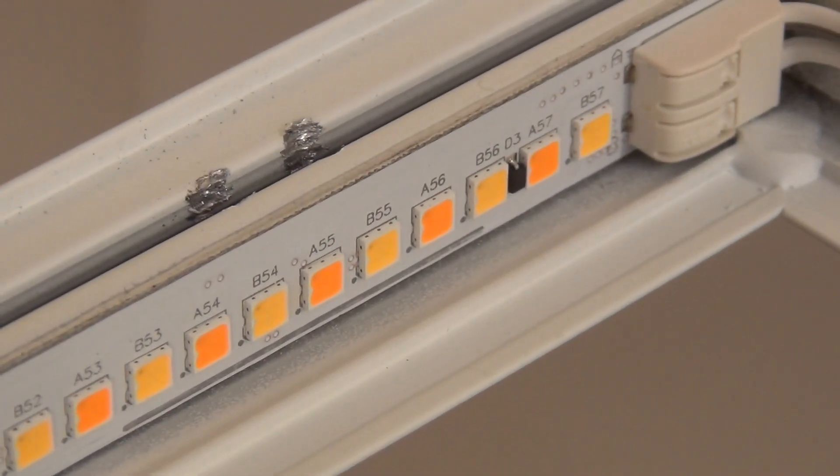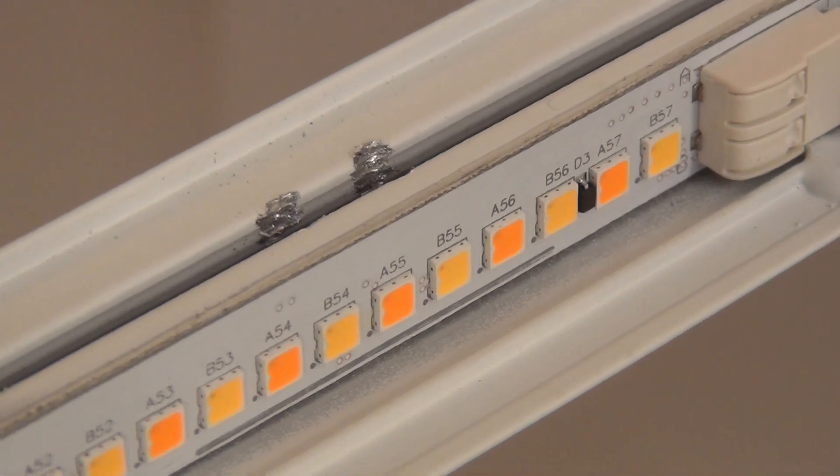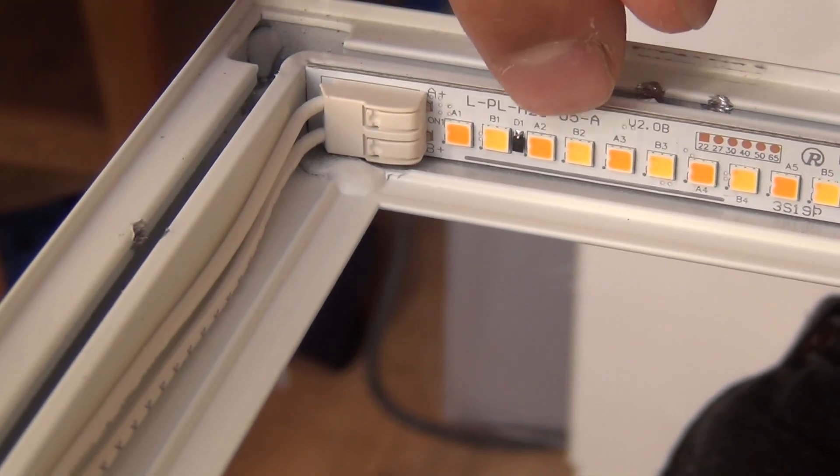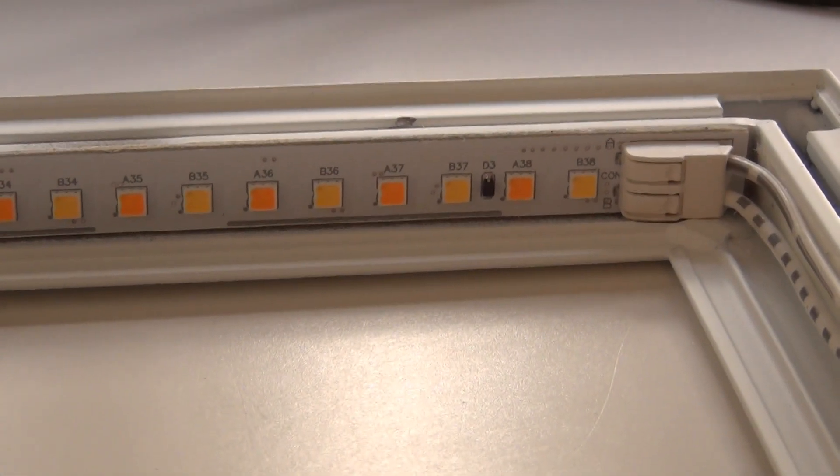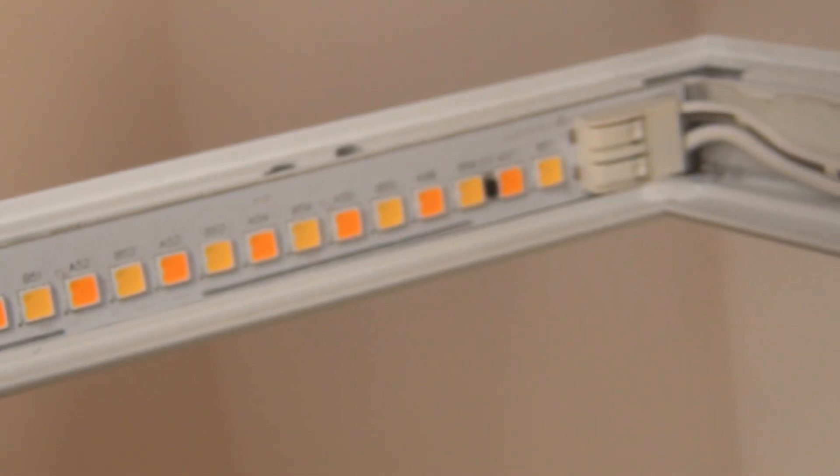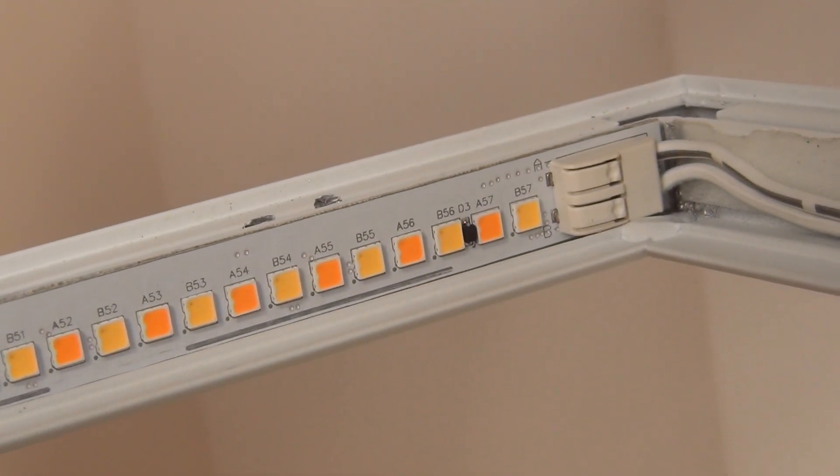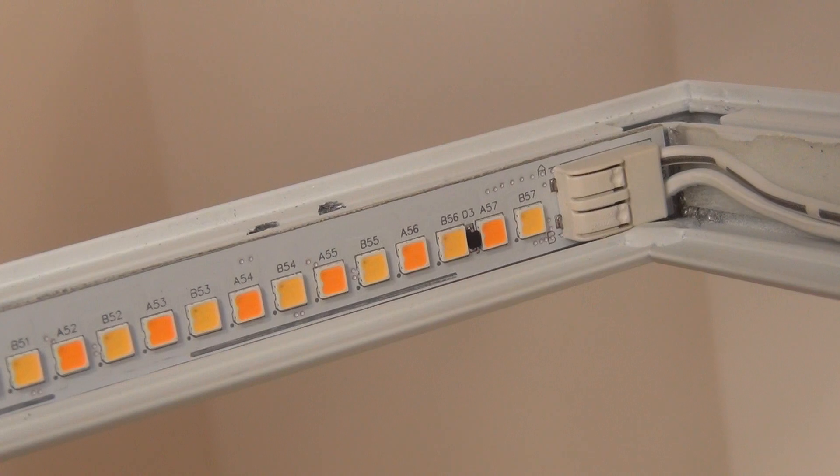So we see B57. Spacing between those LEDs are really different on this side. Well I didn't expect this. I would expect exactly the same PCB on both sides. So we have A38, B38 and we have here a lot more LEDs. Wow didn't expect that really.